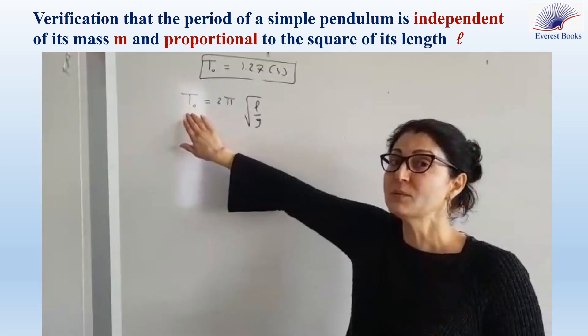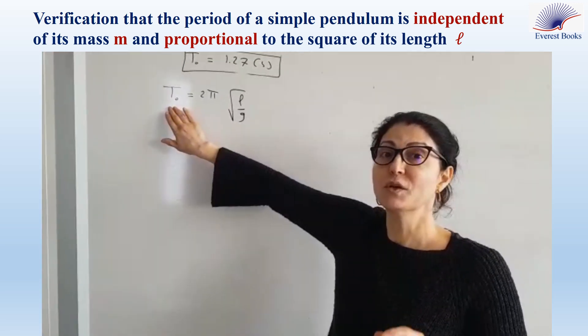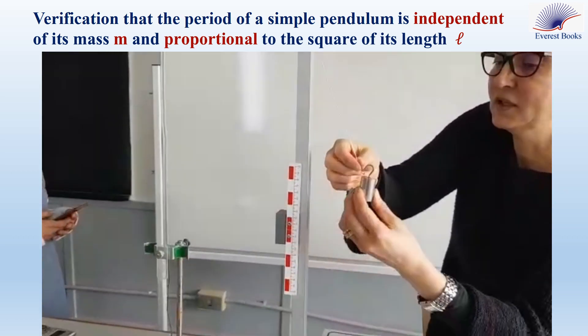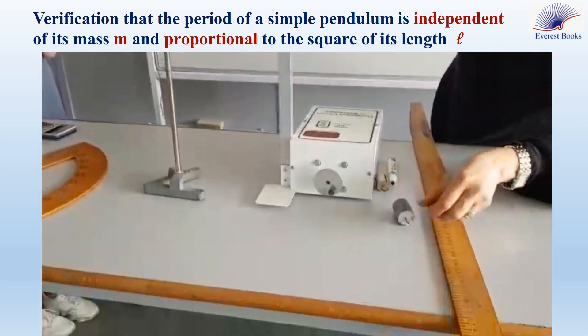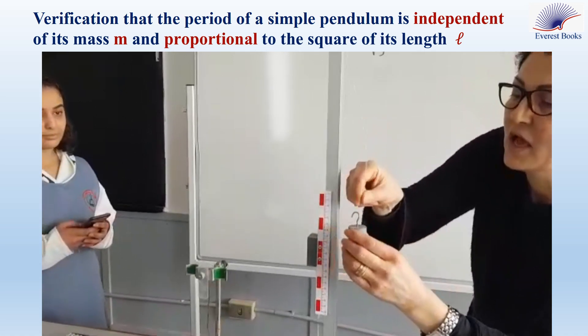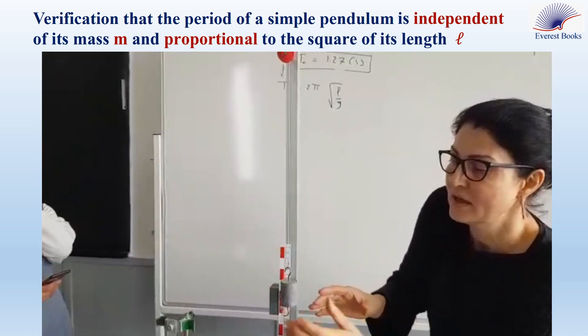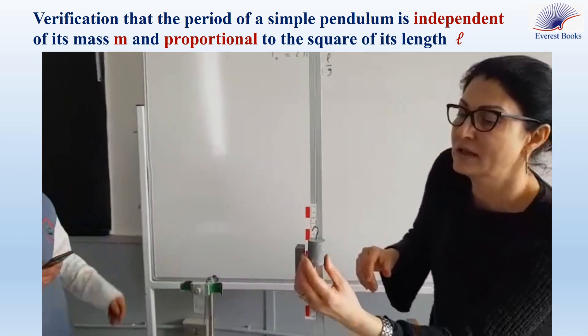The natural period is independent of the suspended mass, which means that if we change the suspended object by another one having a different mass, the natural period must remain the same.